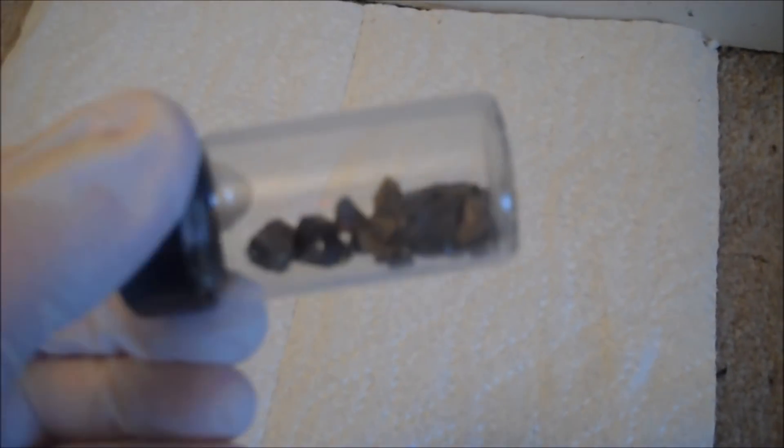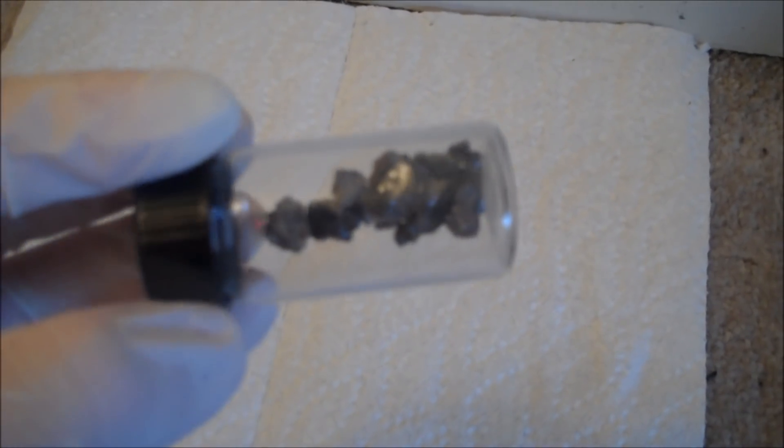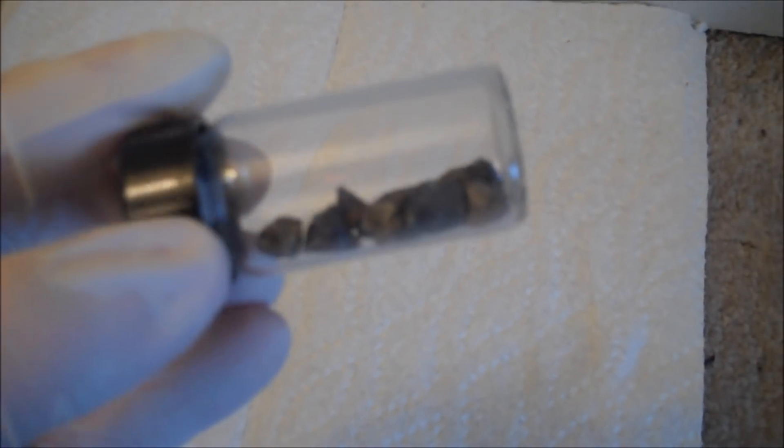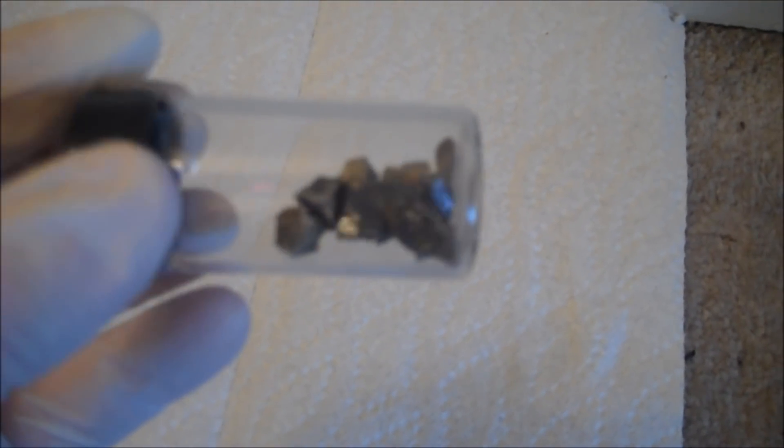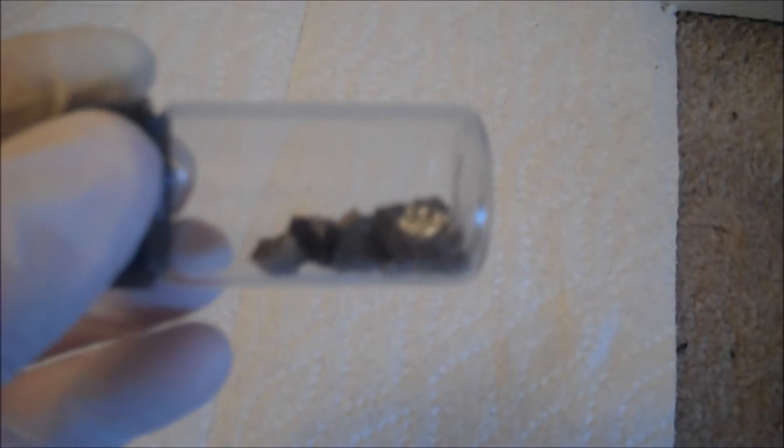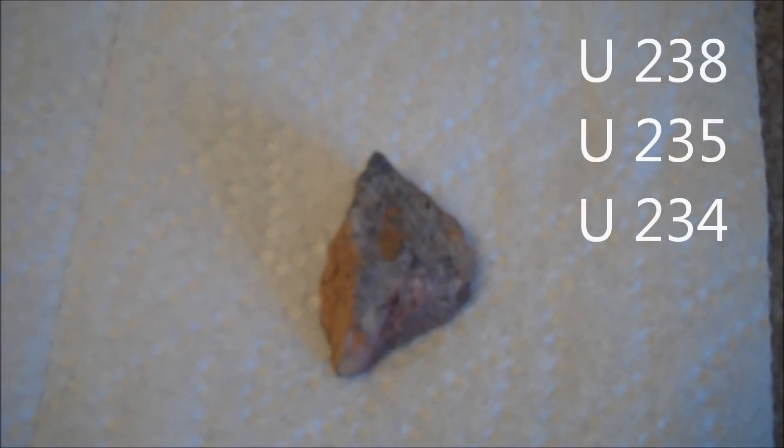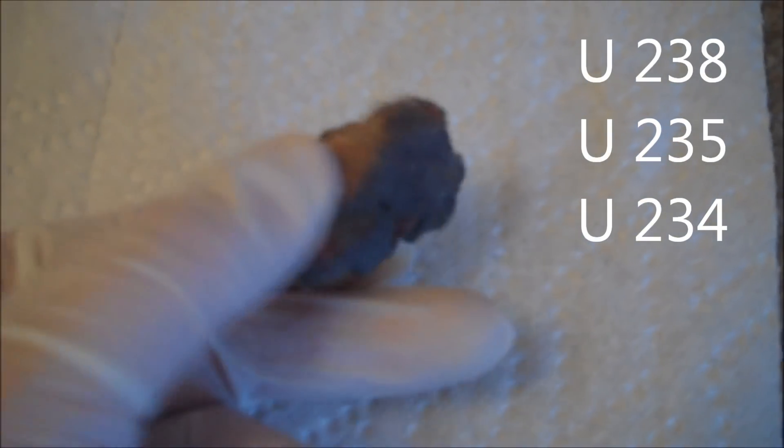There are at least 27 isotopes of uranium that have been either detected or theorized. Typically, only three of them serve any major importance to humanity. Uranium 238, 235, and 233. Uranium 238 is composed of three major elements: Uranium 238, Uranium 235, and to a lesser degree, Uranium 234.